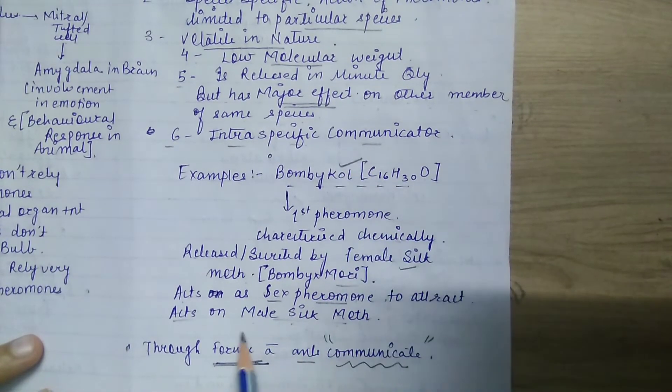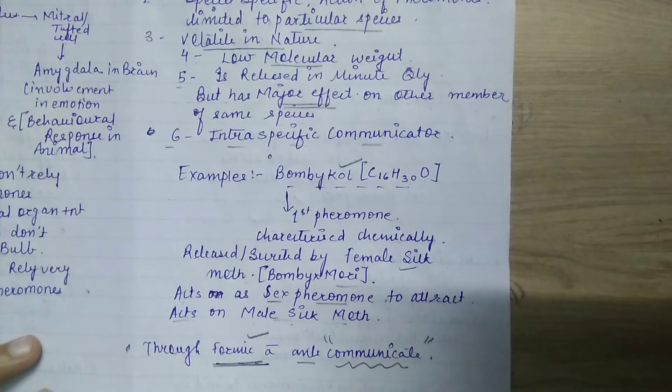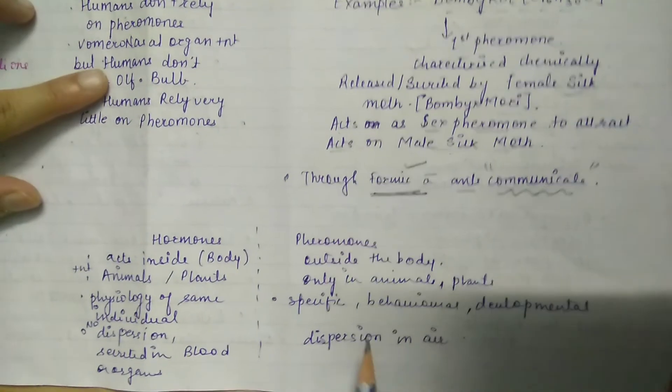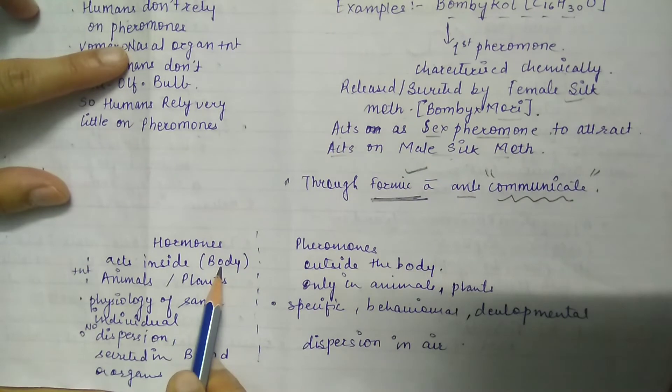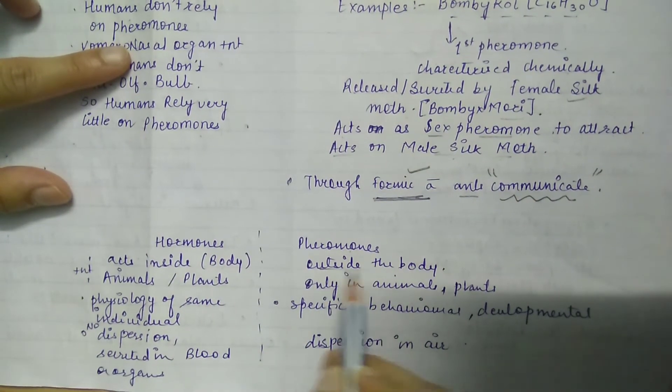Check here: first bombicol, second formic acid. Now there is confusion sometimes—what is the difference between hormones and pheromones? Let us check. I have written in differentiated form. Hormones act inside the body; pheromones act outside the body.